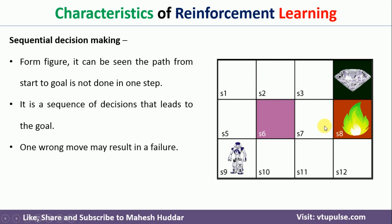For example, if the agent reaches S7 and instead of deciding to go to S3, it makes a decision to go to S8, the entire decision will result in a failure state. This is the very important characteristic of reinforcement learning: sequential decision making.